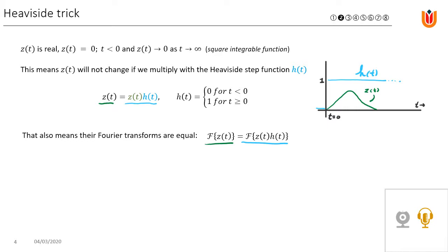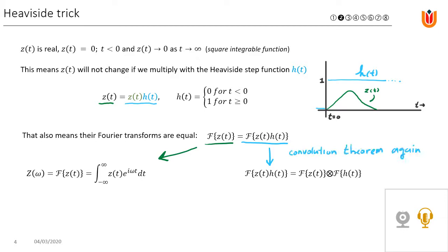That also means that their Fourier transforms are equal: the Fourier transform of z(t) equals the Fourier transform of the product z(t)·H(t). For the right-hand side, we again apply the convolution theorem, so the Fourier transform of the product equals the convolution of the individual Fourier transforms. That expression can be written as a convolution integral — a shifted version of the Fourier transform of the Heaviside function multiplied with the Fourier transform of z(t), then integrated.